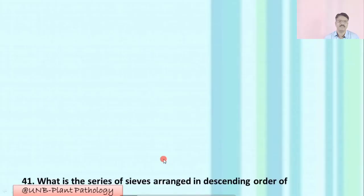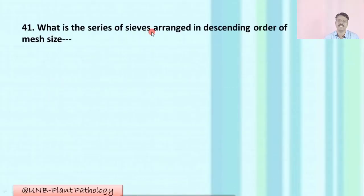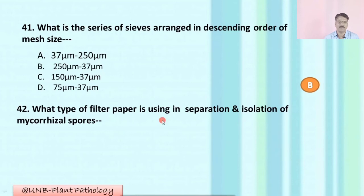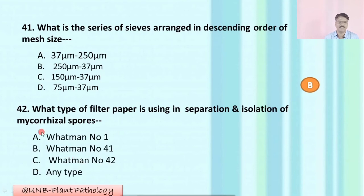Question number forty-one: What is the series of sieves arranged in descending order of mesh size? A: 37 micron to 50 micron; B: 250 micron to 37 micron; C: 150 micron to 37 micron; D: 75 micron to 37 micron. The correct option is B: 250 micron to 37 micron. Question number forty-two: What type of filter paper is used in separation and isolation of mycorrhizal spores? A: Whatman filter paper number one; B: number forty-one; C: number forty-two; D: any type. The correct option is A: Whatman filter paper number one.